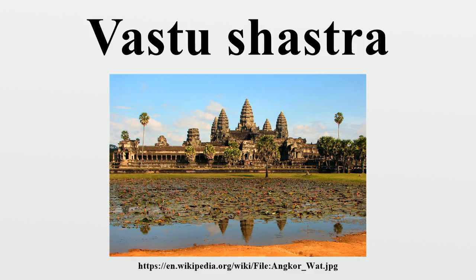The Silpa Prakasa of Odisha, authored by Ramachandra Bhattarika Kaulakara sometime in the 9th or 10th century CE, is another Vastushastra. Silpa Prakasa describes the geometric principles in every aspect of the temple and symbolism, such as 16 emotions of human beings carved as 16 types of female figures. These styles were perfected in Hindu temples prevalent in eastern states of India.